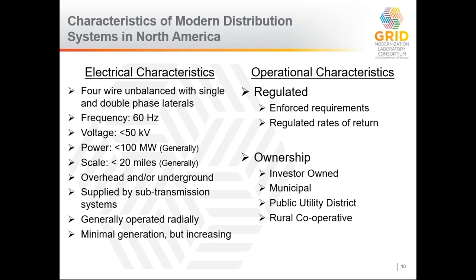Utilities in North America tend to be regulated, with enforced requirements and regulated rates of return, so the technical decisions are almost always driven by the regulatory environment. There are different ownership models: investor-owned utilities that are publicly traded; municipal utilities run by local cities whose service territories can't extend outside that area; rural co-ops that exist in every state and cover roughly 70 percent of the landmass — though they sometimes supply urbanized areas; and in some areas like Washington and Oregon, public utility districts.